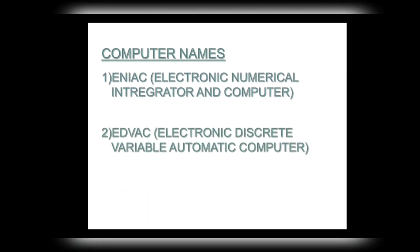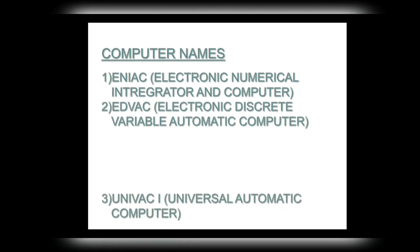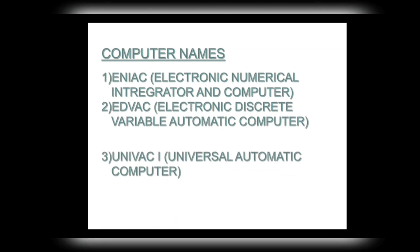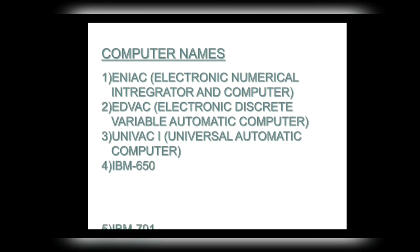Examples of first generation computers: number one, ENIAC — Electronic Numerical Integrator and Computer; number two, EDVAC — Electronic Discrete Variable Automatic Computer; number three, UNIVAC I — Universal Automatic Computer; number four, IBM 650; and number five, IBM 701.